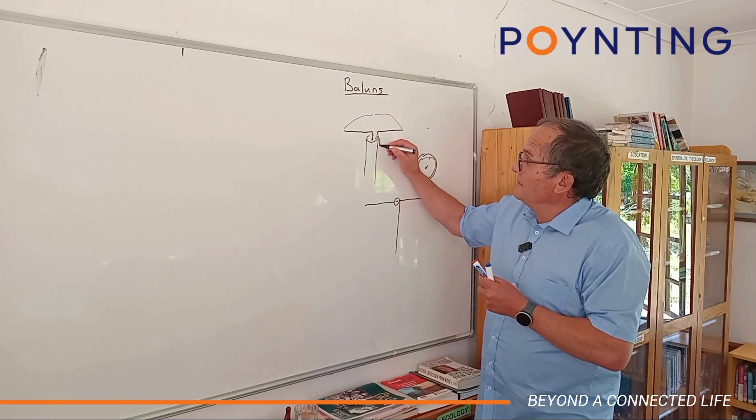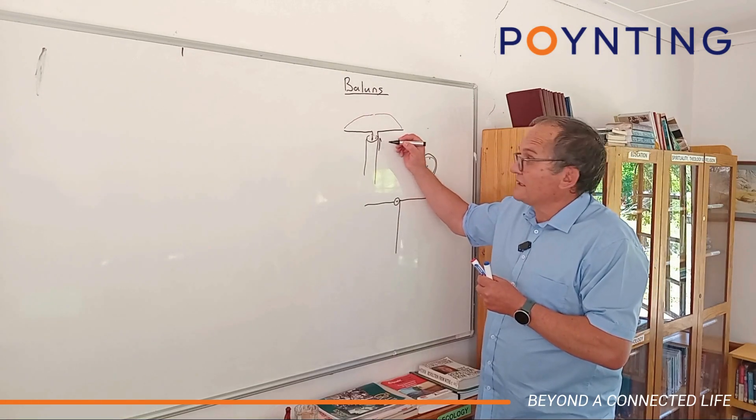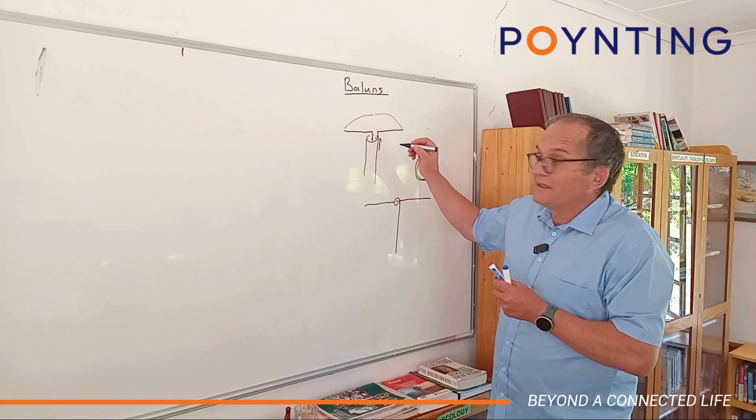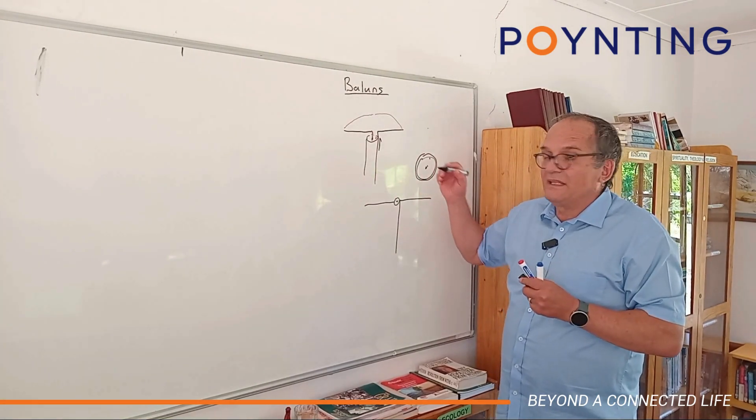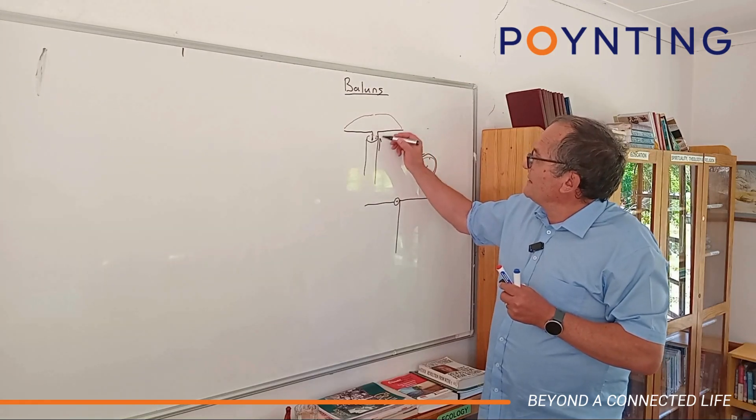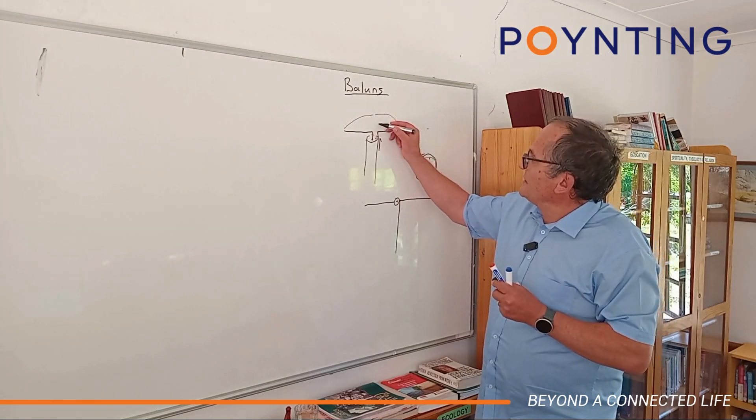But there's a baddie - there's a current that will also now potentially flow on the outside of the coax, that unbalanced current. And it's caused by radiation causing currents to flow here, because this guy is exposed to the antenna radiation.